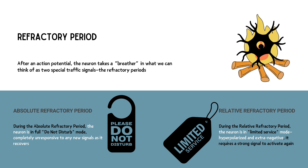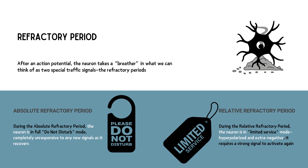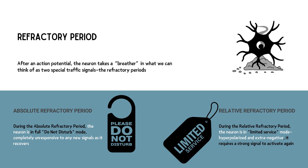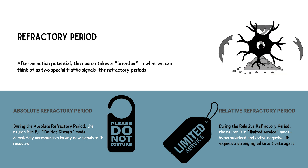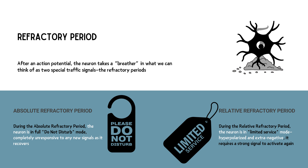Then comes the relative refractory period — the yellow caution phase. Here the neuron is still in a slightly hyperpolarized state, like a flashing yellow light, meaning it can activate but only with a strong push — like a car needing an extra nudge to start on a steep hill. These refractory periods help keep neuron signals smooth and orderly, just like a well-timed traffic system, ensuring signals don't collide and allowing the neuron to reset for its next message.